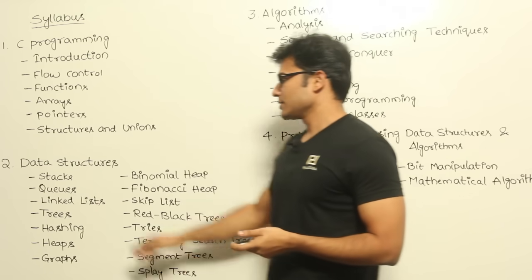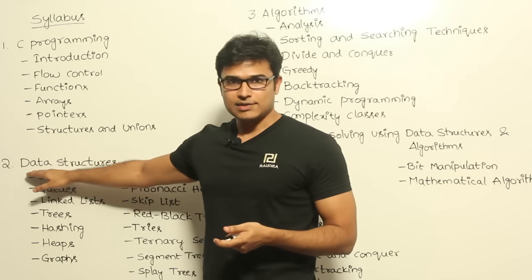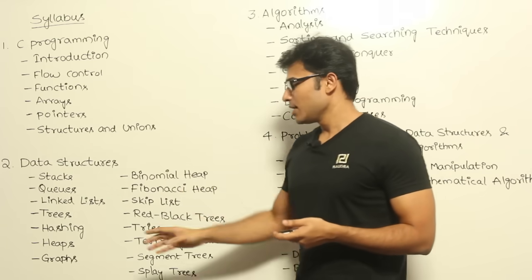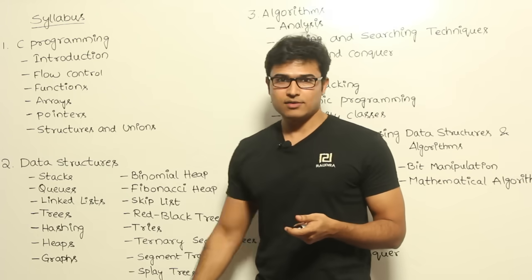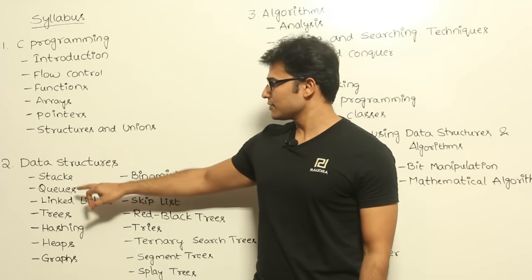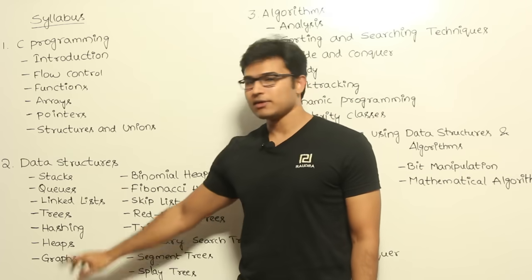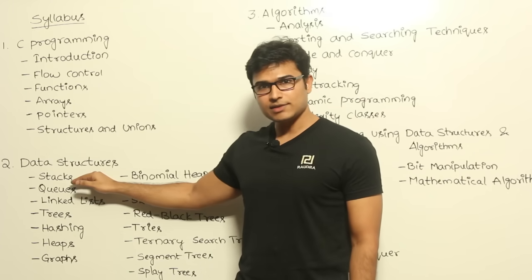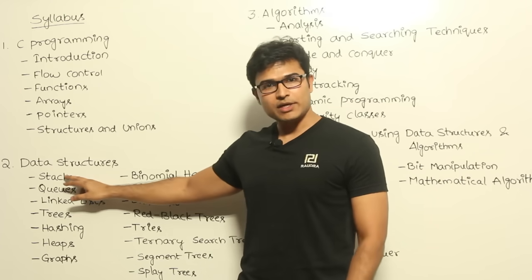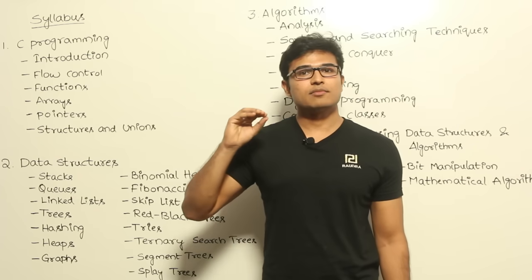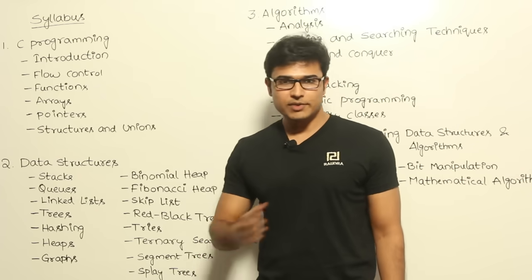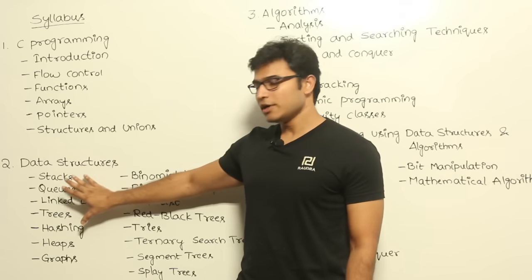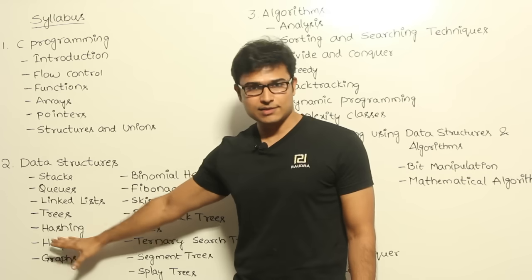Next, we start with data structures, and again we start from basics. We introduce the fundamental data structures first: stacks, queues, linked lists, trees, hashing, heaps, and graphs. While explaining all of these, we start from the basics, show how to implement them, and also give you standard examples found in most textbooks.